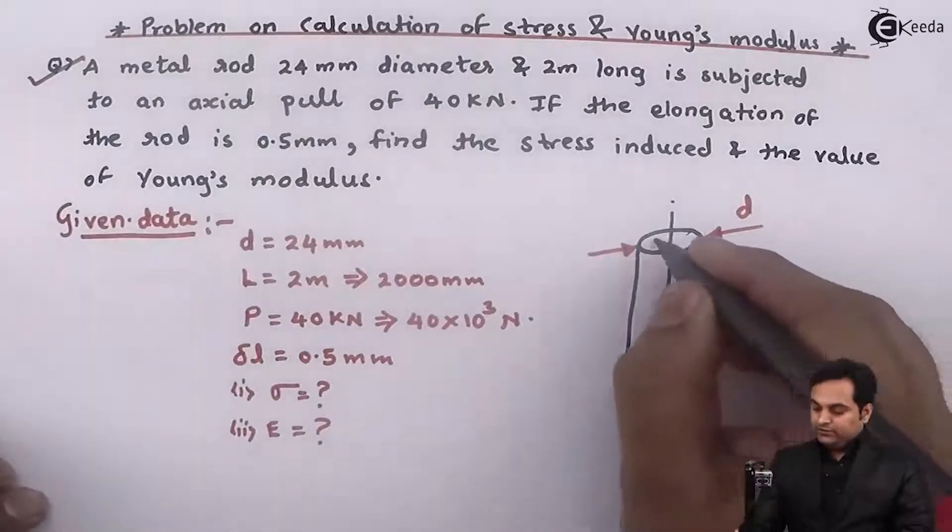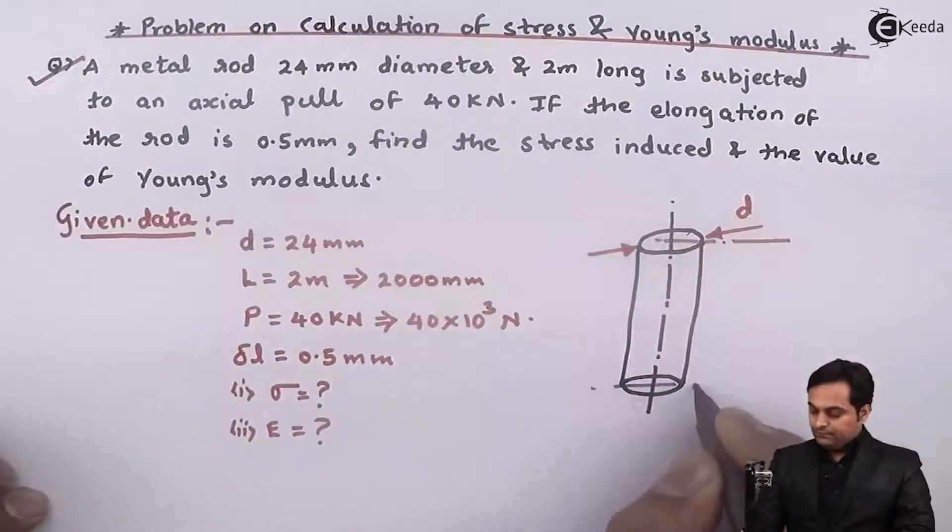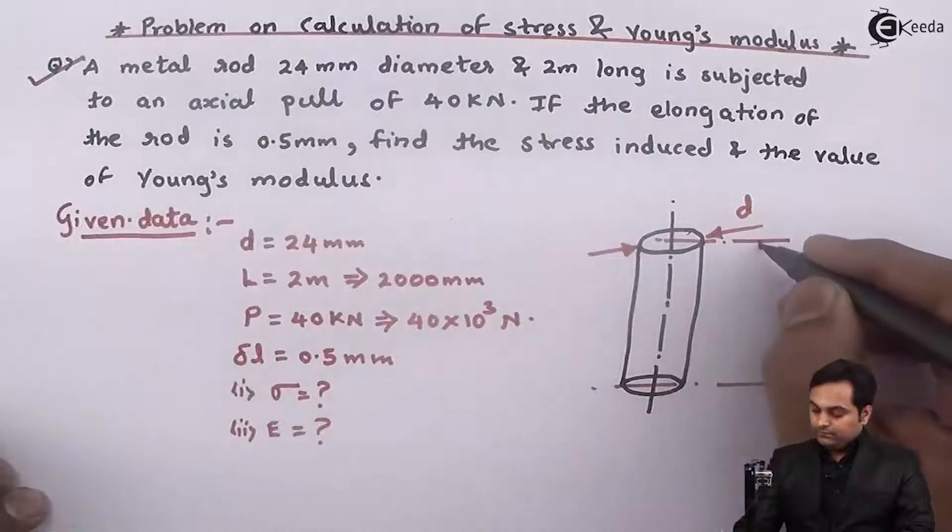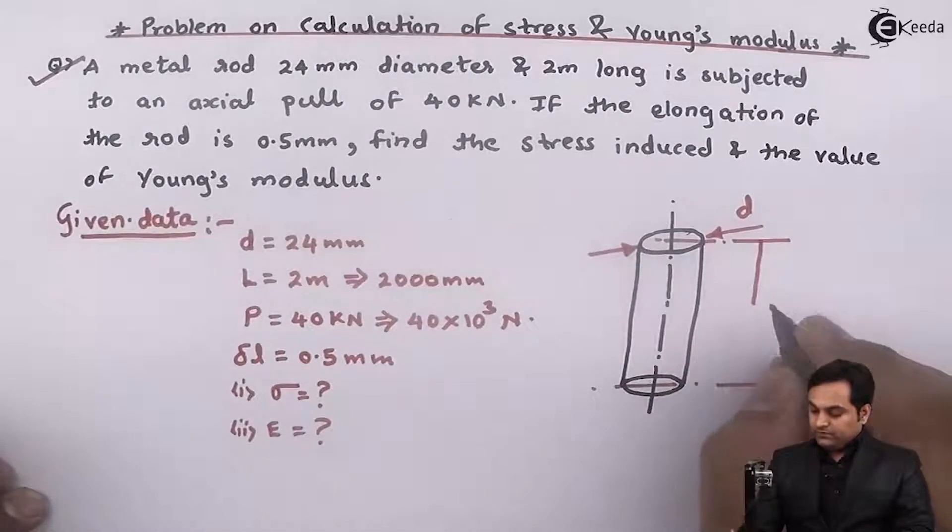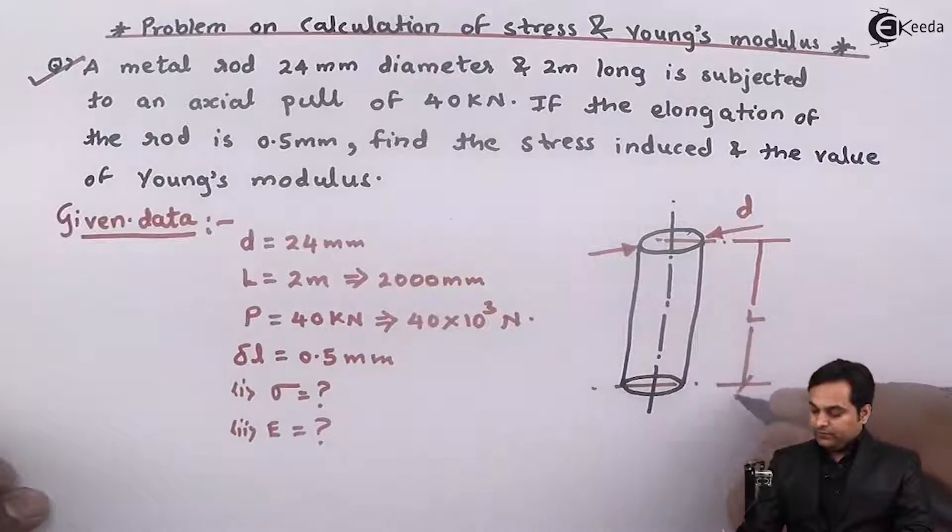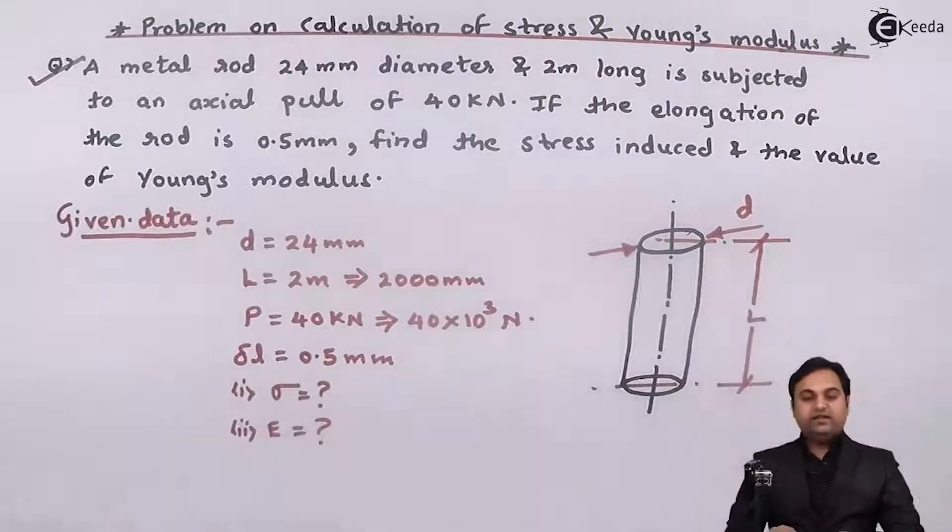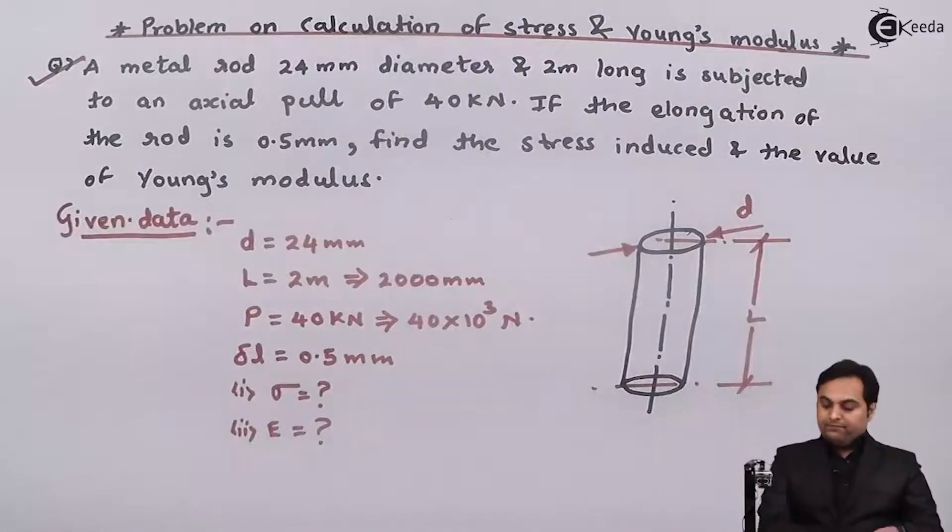The length of this rod denoted by L. So both the values D and L they have given. Next, it is subjected to an axial pull.